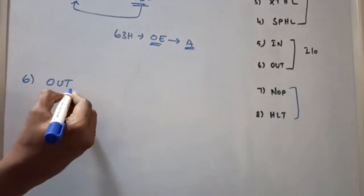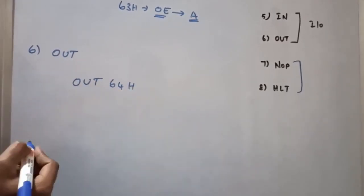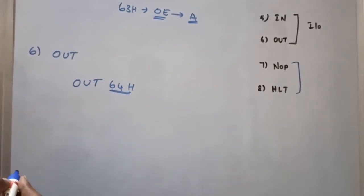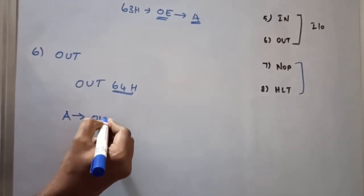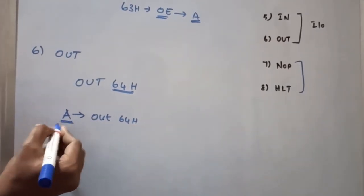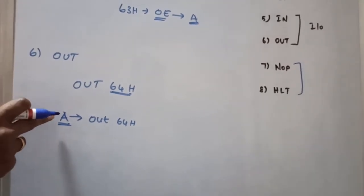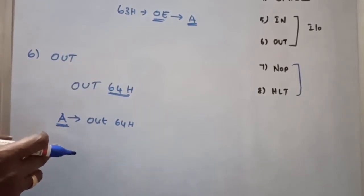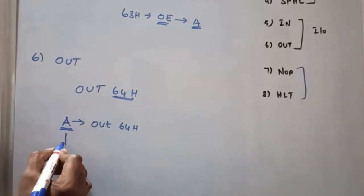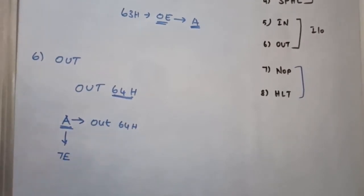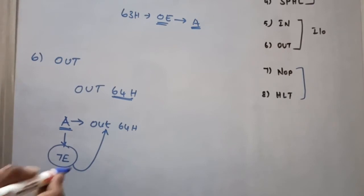The OUT instruction is written as OUT 64H, where 64H is the address location of the output port. The function is: OUT 64H ← A. After execution of any function, the result is stored in the accumulator. If you want to display the accumulator result to an LED or LCD display, you use the OUT 64H instruction. For example, if the accumulator value is 7E, this value is transferred through output port 64H.